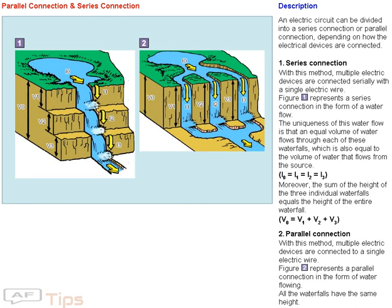1. Series connection. With this method, multiple electric devices are connected serially with a single electric wire. The figure represents a series connection in the form of a water flow. The uniqueness of this water flow is that an equal volume of water flows through each of these waterfalls, which is also equal to the volume of water that flows from the source: I0 equals I1 equals I2 equals I3.